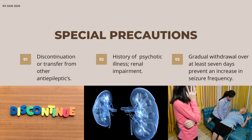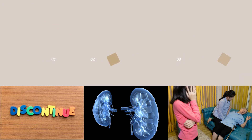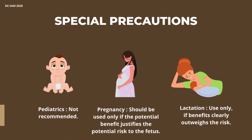Special precautions while taking gabapentin: caution is needed during discontinuation or transfer from other antiepileptics, in patients with a history of psychotic illness, and in those with renal impairment. Gradual withdrawal over at least 7 days is recommended to prevent an increase in seizure frequency. Gabapentin is not recommended in pediatrics. In pregnancy, it should be used only if the potential benefit justifies the potential risk to the fetus. During lactation, use only if benefits clearly outweigh the risk.